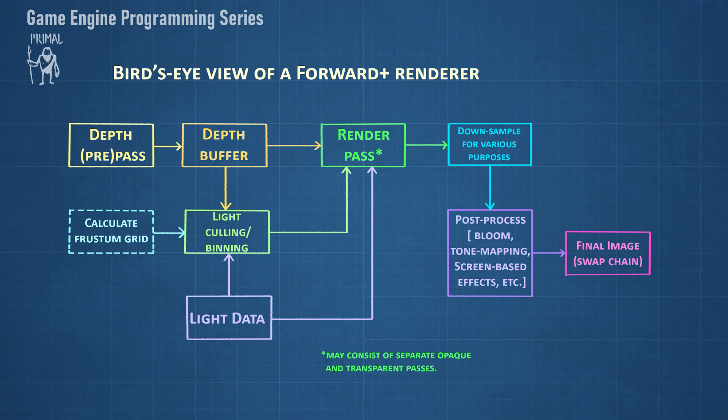Here I would like to give a high-level overview of the Forward Plus renderer. Although displaying 3D objects using rasterized triangles is well understood and straightforward, realistically lighting a 3D scene remains one of the challenging parts of real-time rendering. There are three common and one less common approaches to real-time lighting. The three common methods are forward rendering, deferred rendering, and forward plus rendering.